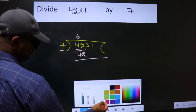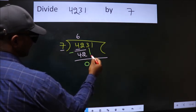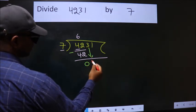Now, we should subtract. We get 0. After this, bring down the next number. So, 3 down.